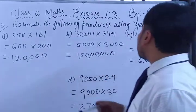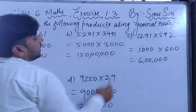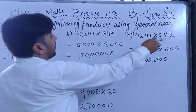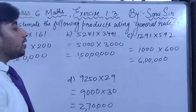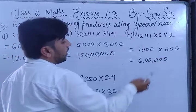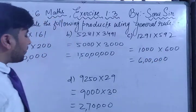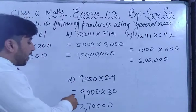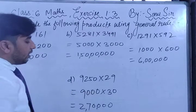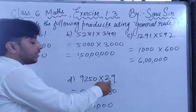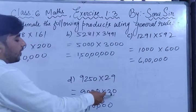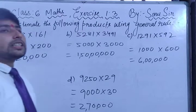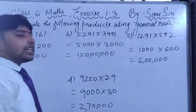For the C question: 1291 — the second digit is less than 5, so the nearby value is 1000. For 592, the second digit is greater than 5, so the nearby value is 600. 1000 × 600 = 6 lakh. For the D question: 9250 — the second digit 2 is less than 5, so round figure value is 9000. For 29, the second digit is greater than 5, so round figure value is 30. 9000 × 30 = 2 lakh 70,000, which is the right answer.